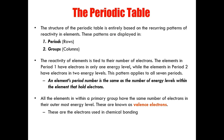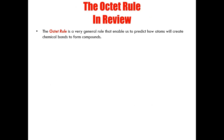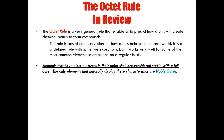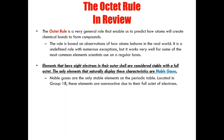Valence electrons are the electrons used in chemical bonding, and they are also responsible for the chemical behavior of elements. This brings us to a review of the octet rule. The octet rule is a very general rule that enables us to predict how atoms will create chemical bonds to form compounds. The rule is based on observations of how atoms behave in the real world. It is an undefined rule with numerous exceptions, but it works very well for some of the most common elements. The rule states that when elements have eight electrons in their outermost energy level, they are considered stable with a full octet. The only elements that naturally display these characteristics are noble gases. Noble gases are the only stable elements on the periodic table. Located in group 18, these elements are non-reactive due to their full octet of electrons.